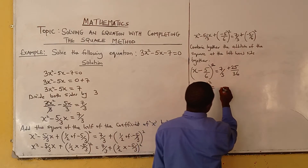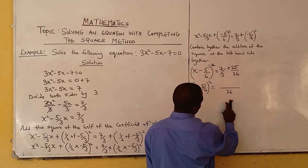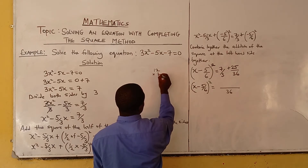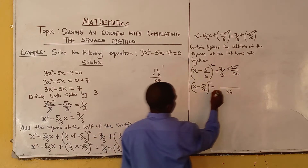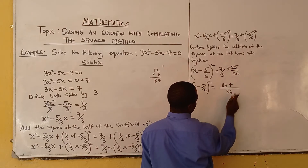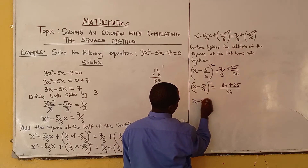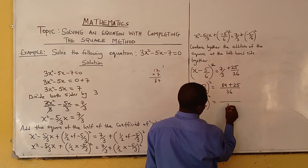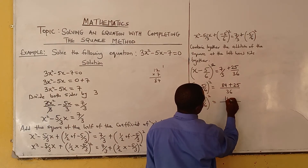Now we find the LCM of the right-hand side, which is 36. 36 divided by 3 is 12, and 12 times 7 is 84. 36 divided by 36 is 1, and 1 times 25 is 25. So we have (x − 5/6)² equals 84 plus 25 over 36, which gives us (x − 5/6)² equals 109/36.